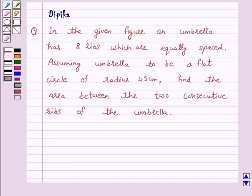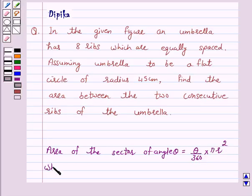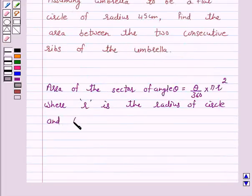The given problem is based on the area of a sector of a circle. We know that the area of the sector of angle theta is equal to theta upon 360 into pi r squared, where r is the radius of the circle and theta is the angle of the sector in degrees.